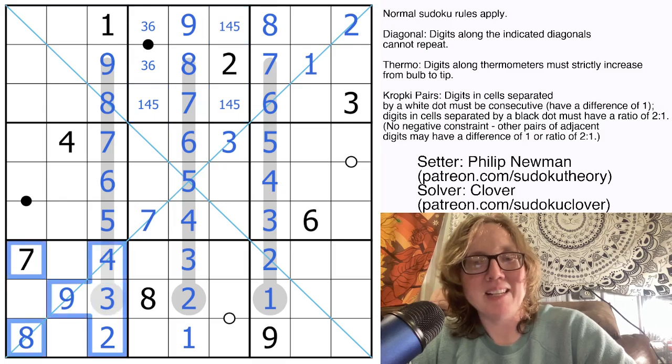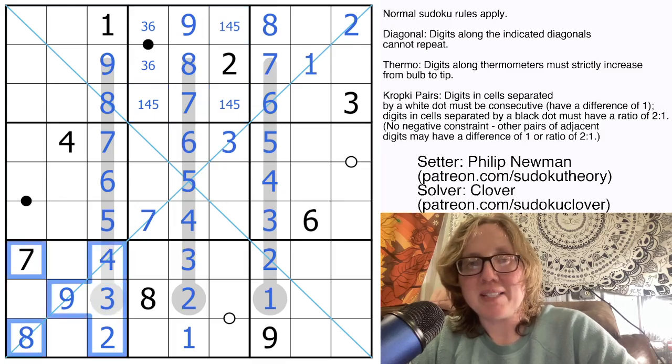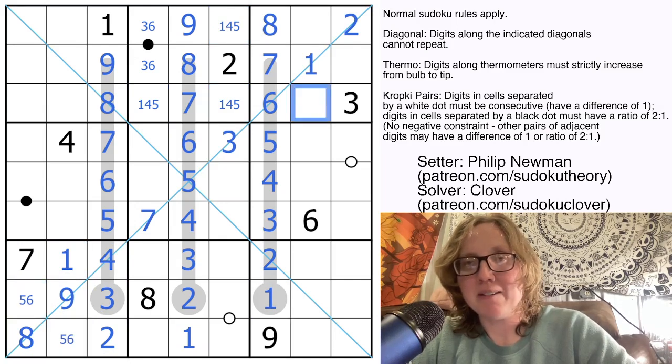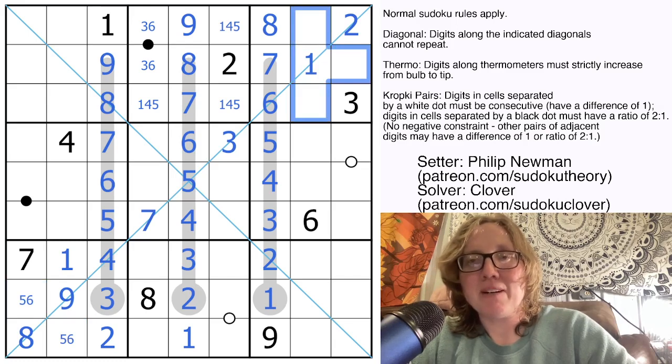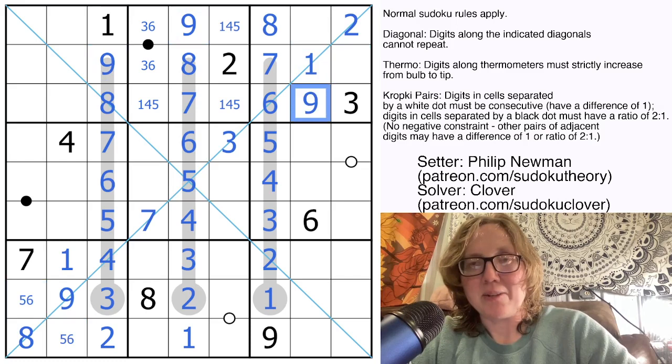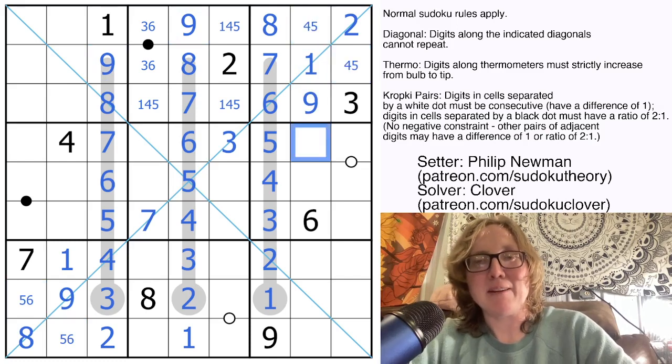And let's pencil mark in a few more of our pretty restricted regions here. So this bottom left region only needs 1, 5, and 6. 1 can't go in those positions due to the two 1s there and there, so that's our 1. And then we have a 5, 6 pair. Here we need 4, 5, and 9. 9 can't go into these two positions, so it goes here. And that is a 4, 5 pair.